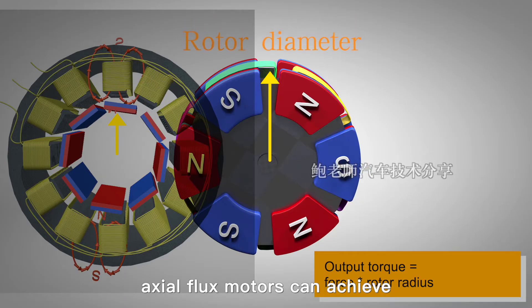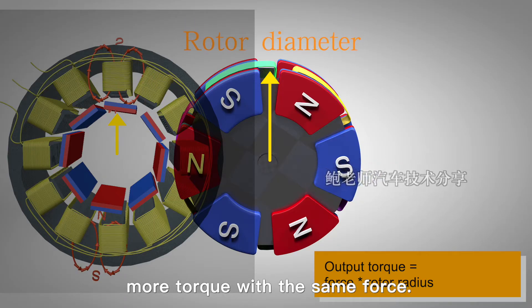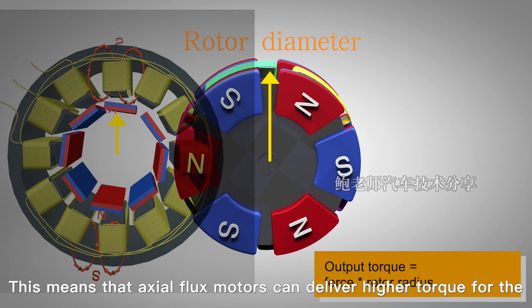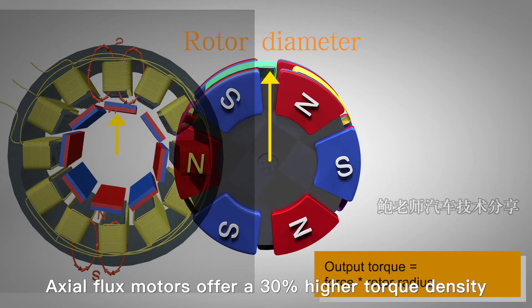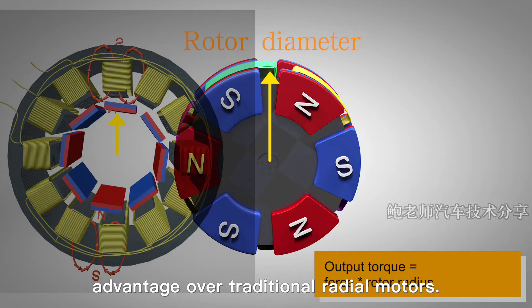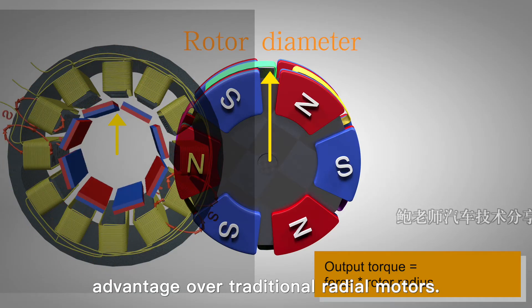Axial flux motors can achieve more torque with the same force. This means that axial flux motors can deliver higher torque for the same amount of permanent magnets and copper winding material. Axial flux motors offer a 30% higher torque density advantage over traditional radial motors.